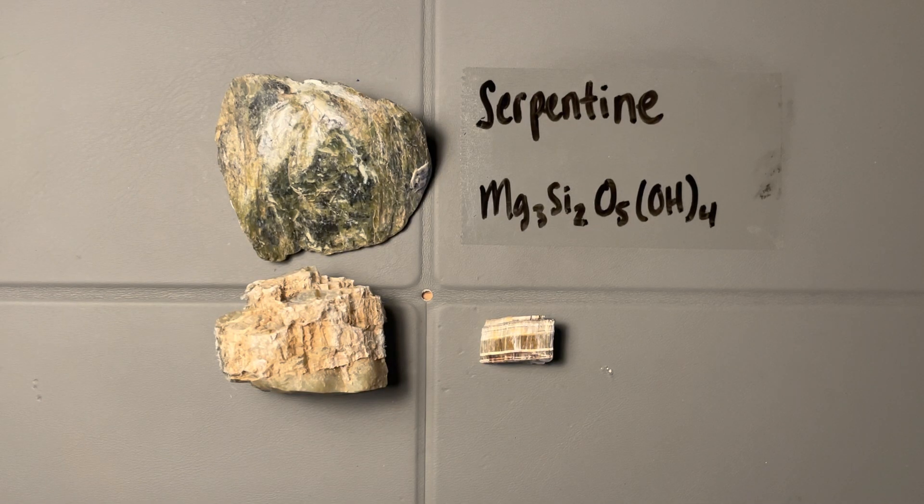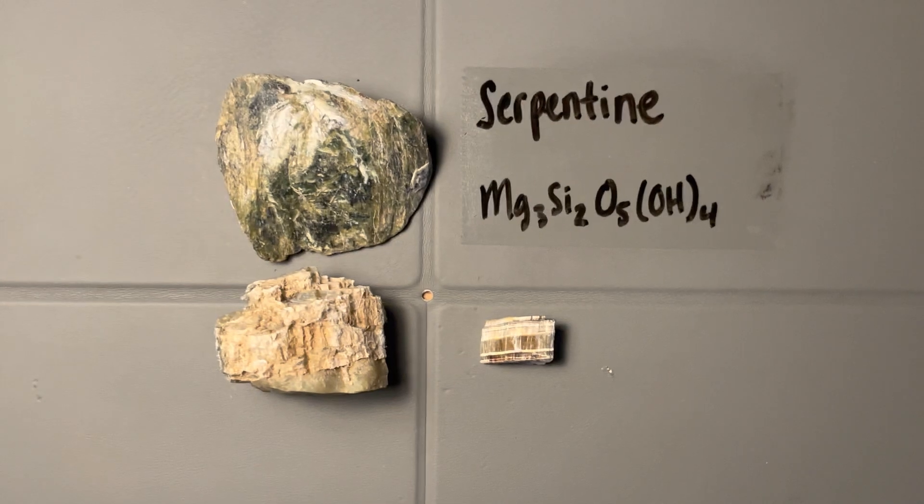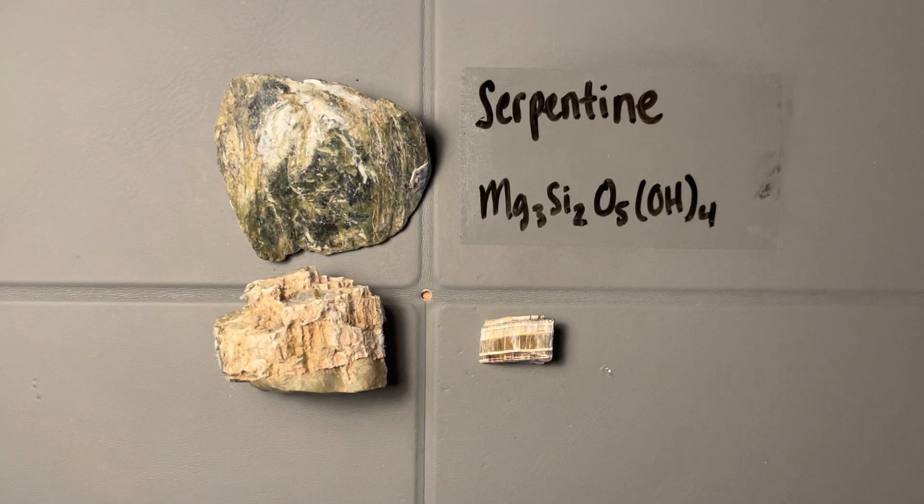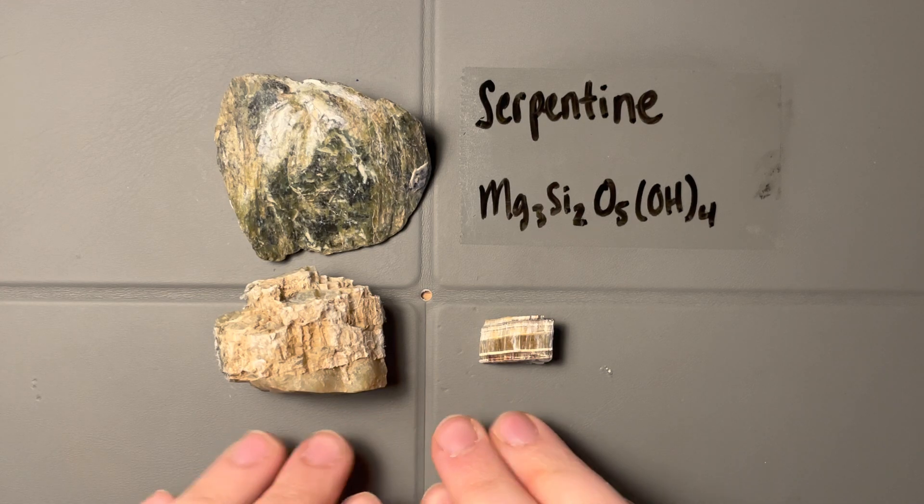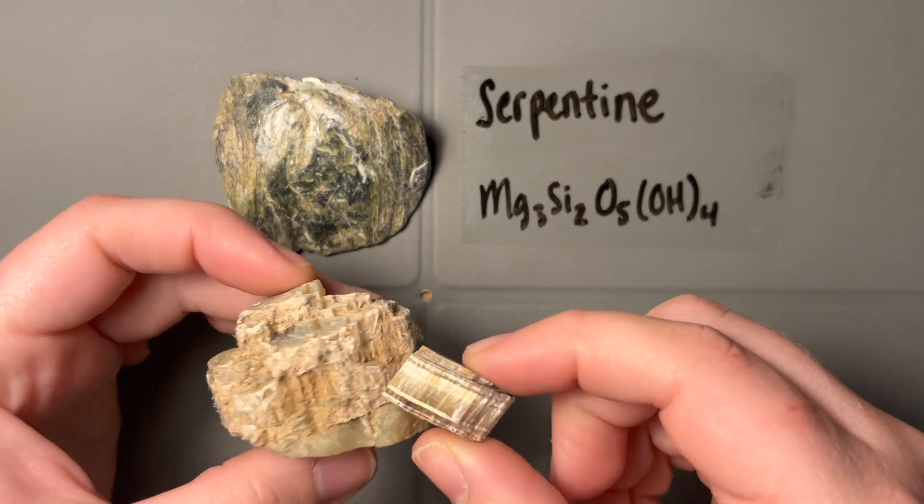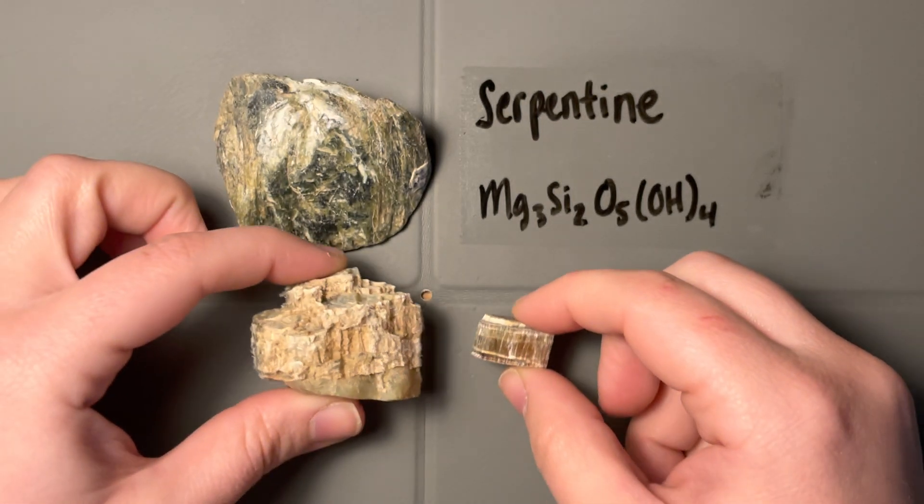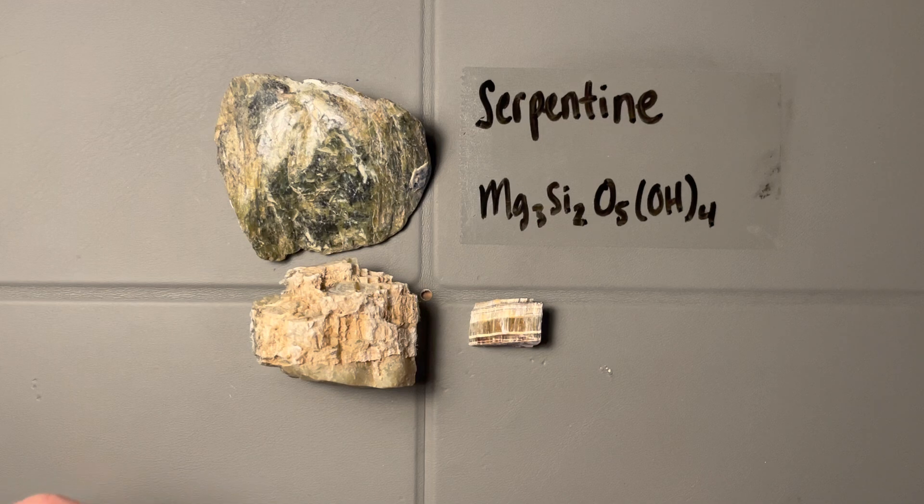All right, let's talk about serpentine, the most dangerous mineral on our list. Actually, yes, it is quite dangerous. The samples I have here are pretty safe for me to interact with, but most samples like these with this texture you may better know as asbestos.